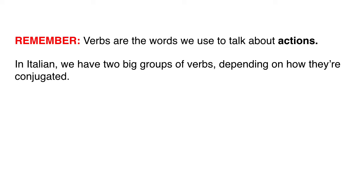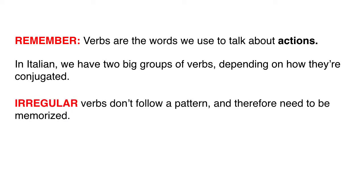In Italian we have two big groups of verbs depending on how they are conjugated. Remember that conjugation is the action of changing the form of a verb so that it matches its subject — the person or people doing the action. So two big groups: irregular verbs are the ones that don't follow a pattern.